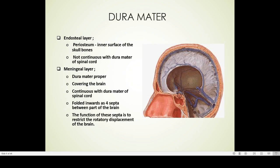The endosteal layer is basically the periosteum, attached to the inner surface of the skull bones. The endosteal layer specifically ends at the level of the foramen magnum, which means it is not continuous with the dura mater of the spinal cord. The meningeal layer forms the covering of the brain and is continuous beyond the foramen magnum into the spinal cord. The meningeal layer is folded to form four septa or dural folds between the parts of the brain, and the function of these septa is to restrict the rotatory displacement of the brain.